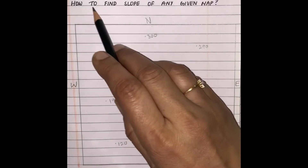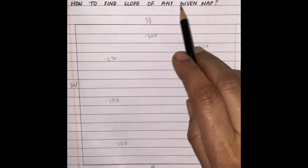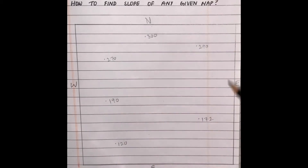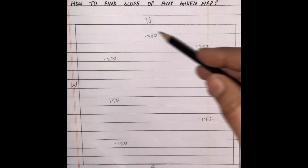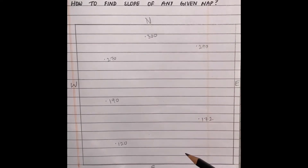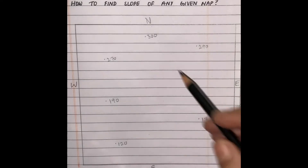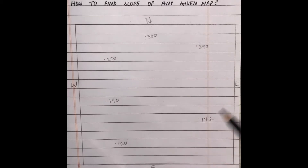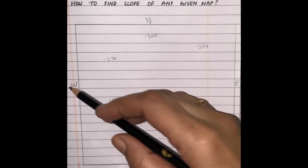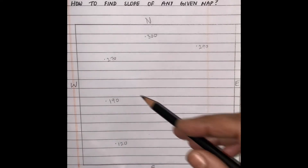Hello students. In this video I will clear the most common doubt: how to find the slope of any given map. Here I have drawn one rectangle with many spot heights, imagining it as a map. We know there are four main directions — north, south, east, and west. Our first step is to see the spot heights.